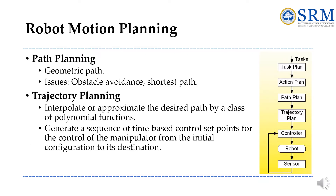Robot motion planning can be either path planning or trajectory planning. In path planning, there is a path description and path constraints such as obstacles, along with constraints imposed by robot dynamics. In trajectory planning, joint trajectories in terms of position, velocity, and acceleration are identified. In the first method, a path is planned in Cartesian space using inverse kinematics to find the corresponding path for the joints in joint space. In the second method, inverse kinematics is used to find the initial and final joint positions in joint space.